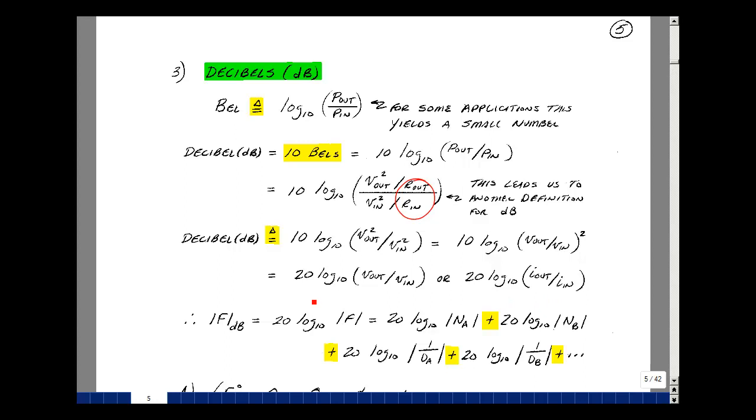So if we go back to the last page and take the log of our transfer function and multiply it by 20, then we line up with the definition of a decibel. That's going to be 20 log base 10 of our first term, second term, third term, fourth term, and so on.